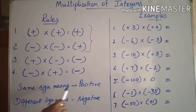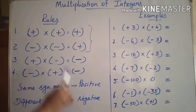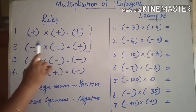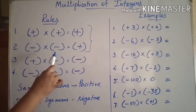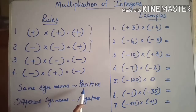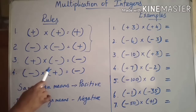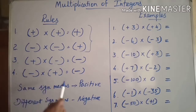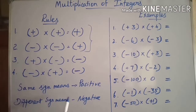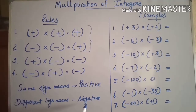Same sign means positive — both integers are positive or both are negative, the result will be positive. Different sign — that is one positive and one negative or negative and positive — the result is always negative.